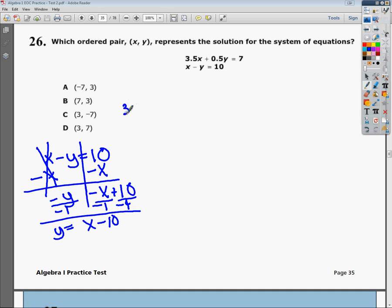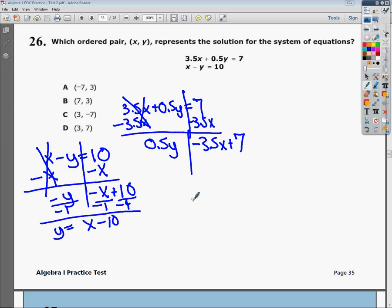For the next one, draw my line, subtract 3.5x. One of the biggest things I see people do is combine the negative 3.5x and the 7. That can't happen. It's like apples and oranges. You can add as many oranges to a bag of apples as you want, but it's not going to make any more apples. Divide by 0.5. So I do negative 3.5 divided by 0.5, and it gives me negative 7x. 7 divided by 0.5 gives me 14.